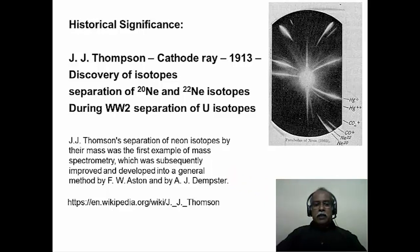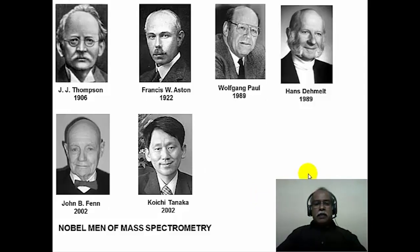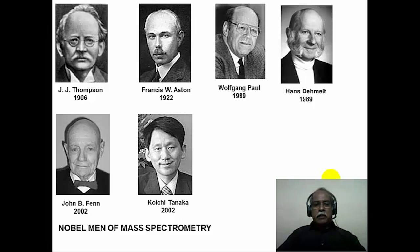This technique was subsequently improved and developed by his co-workers Ashton and Dempster. JJ Thomson received the Nobel Prize in 1906 for his contribution on cathode ray tubes and the discovery of the electron. Francis Ashton continued the mass spectrometry work developed by JJ Thomson and discovered several isotopes of various elements in the periodic table, receiving a Nobel Prize in 1922.